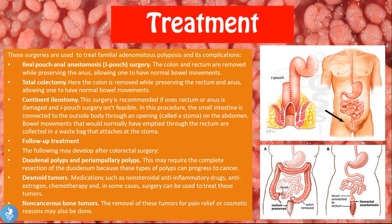A continent ileostomy is recommended if the rectum or anus is damaged or J-pouch surgery is not feasible. In this procedure, the small intestine is connected to the outside of the body through an opening called a stoma in the abdomen. Bowel movements are then collected in a waste bag that attaches to the stoma.